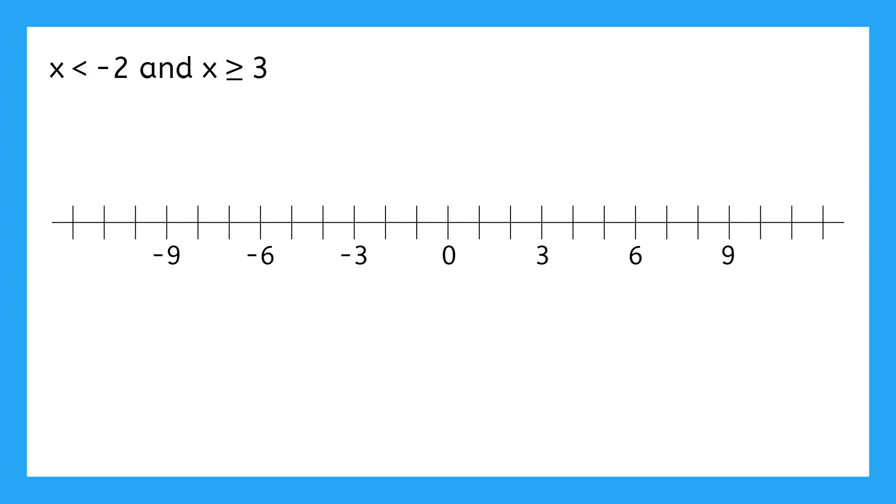It is actually possible for an AND compound inequality to have no answer. For instance, this one: x < -2 and x ≥ 3. Here is the numbers that are less than negative 2 and here are the numbers greater than or equal to 3. We used a closed point here because it's an or equal to, so 3 is included.